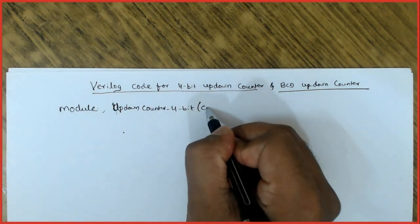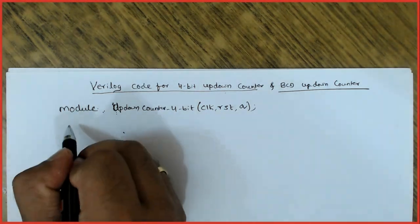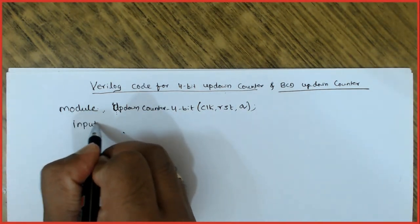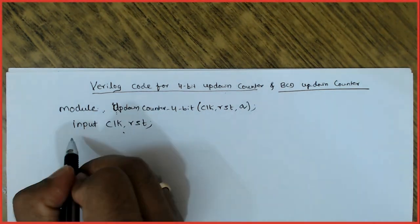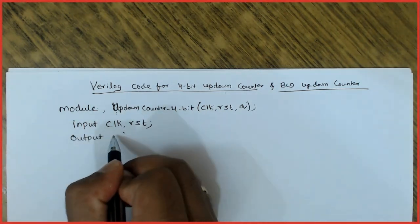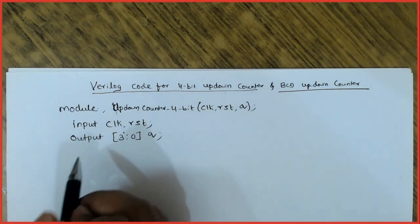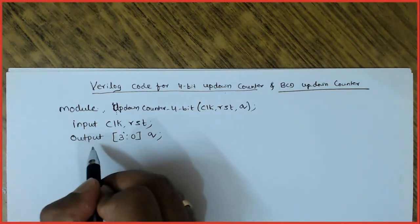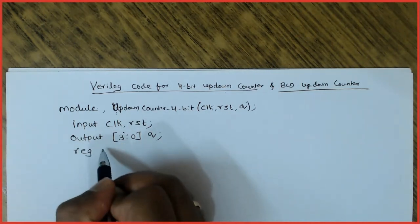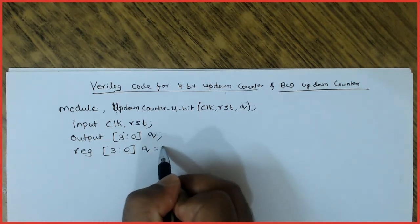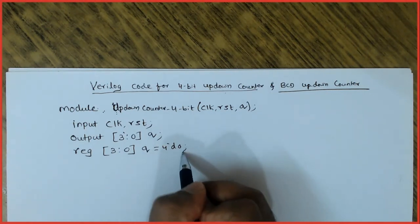The module has two inputs and one output Q. The inputs are clock and reset. The output is a 4-bit register declared as 'reg [3:0] Q', since it is a 4-bit counter. I initialize it to 4'b0000, or equivalently 4'd0. Both are acceptable.